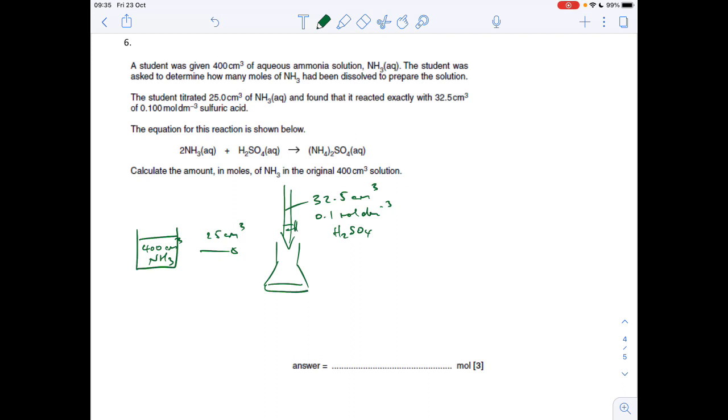Final question: I've knocked up a little diagram to visualize what's happened. The student's been given 400 cm cubed of aqueous ammonia, they've taken 25 out, that's gone into a conical flask, and they've done a titration using 0.1 moles per decimeter cubed sulfuric acid. They found the average titer was 32.5 cm cubed. We've got to work out the moles of ammonia in the original 400 cm cubed solution. First, work out the moles of H2SO4: concentration times volume, 0.1 times 0.0325, which is 3.25 times 10 to the minus 3.